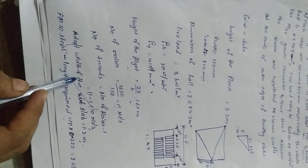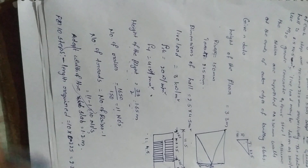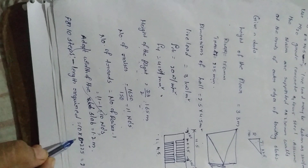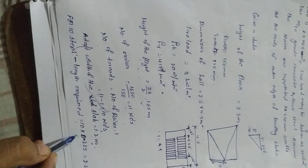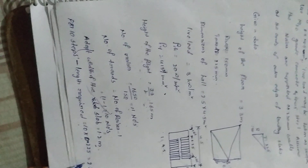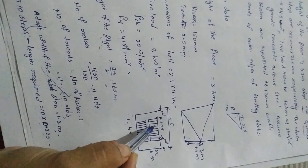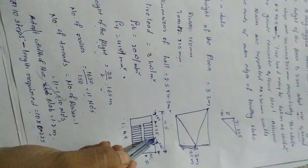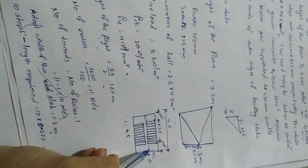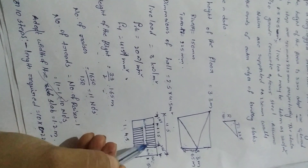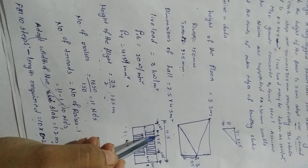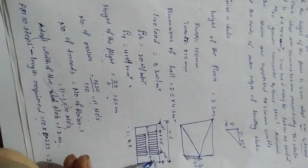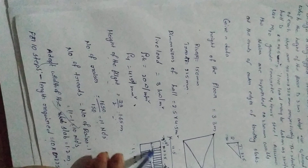We assume the width of the slab as 1.2 meters. Next, calculate the length required for the 10 steps: 10 steps multiplied by tread width of 0.225 meters equals 2.25 meters. This is shown diagrammatically as the total width of the steps. Using the total hall length of 4.5 meters and step width of 2.25 meters, we calculate the two landing widths.